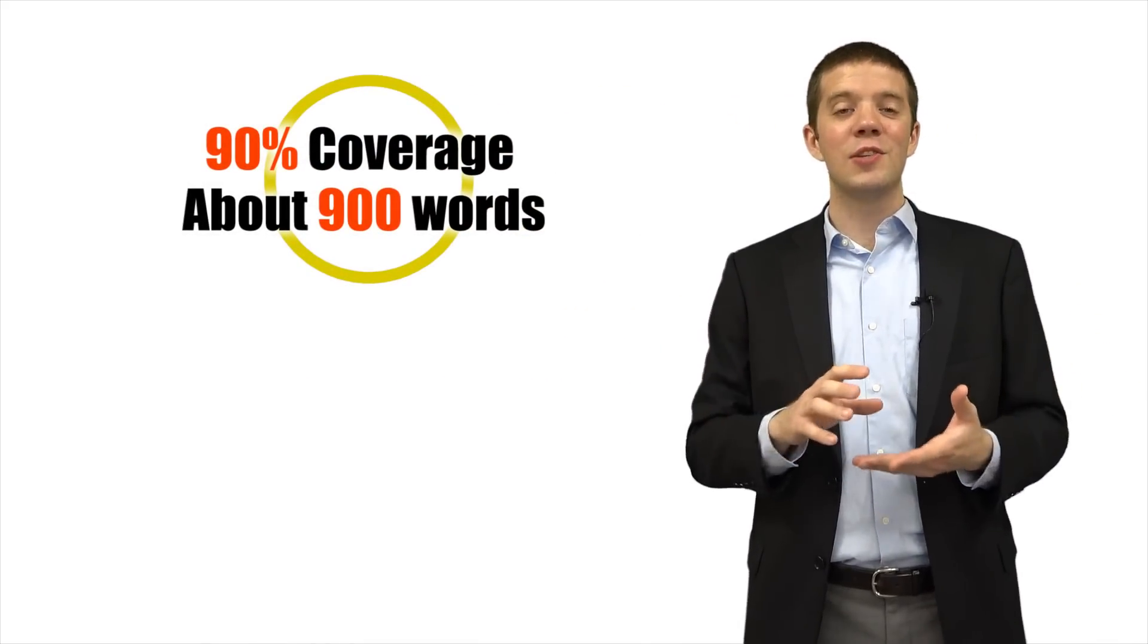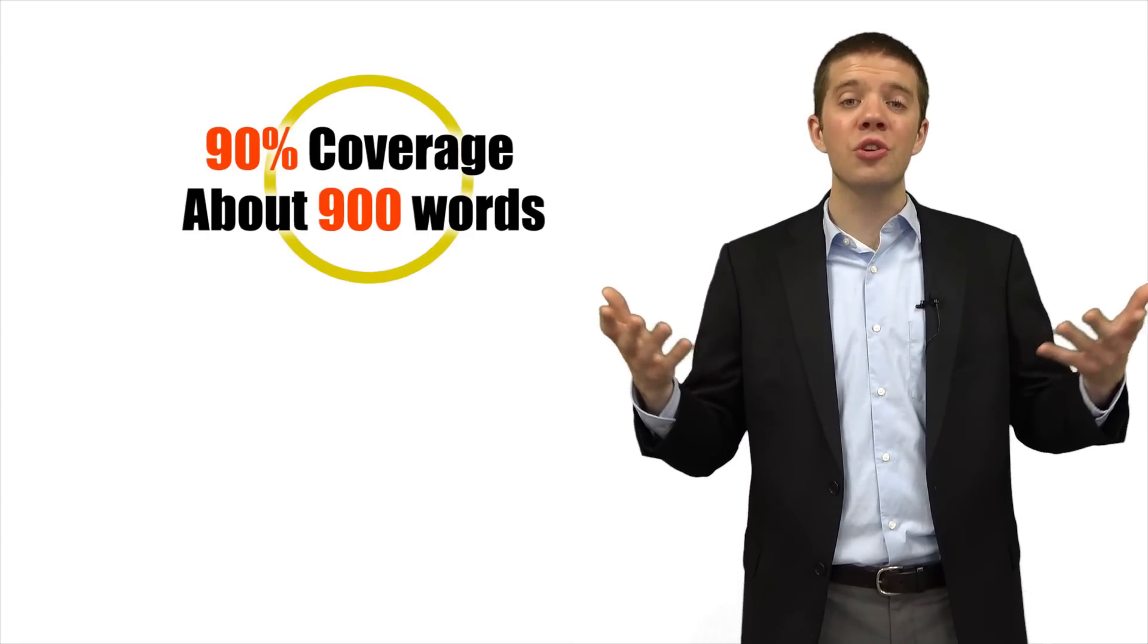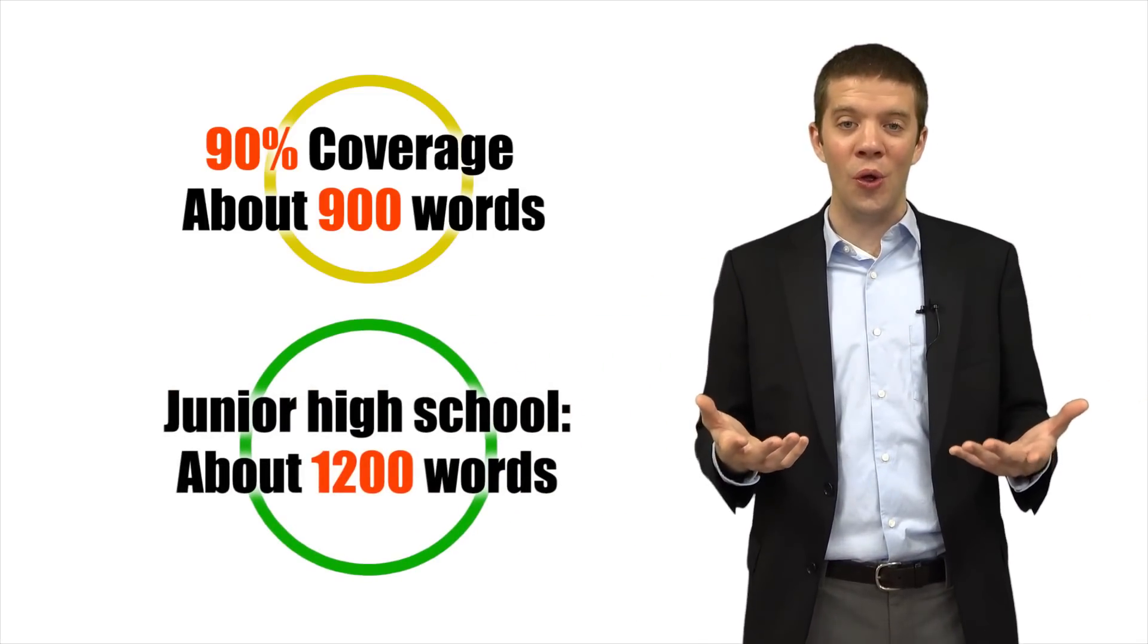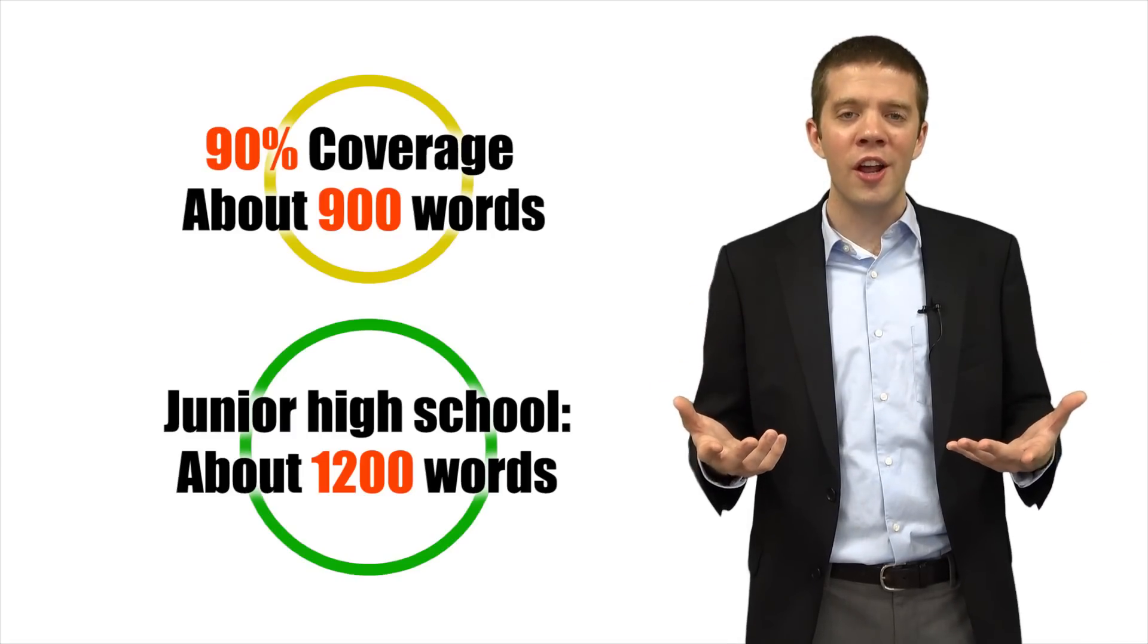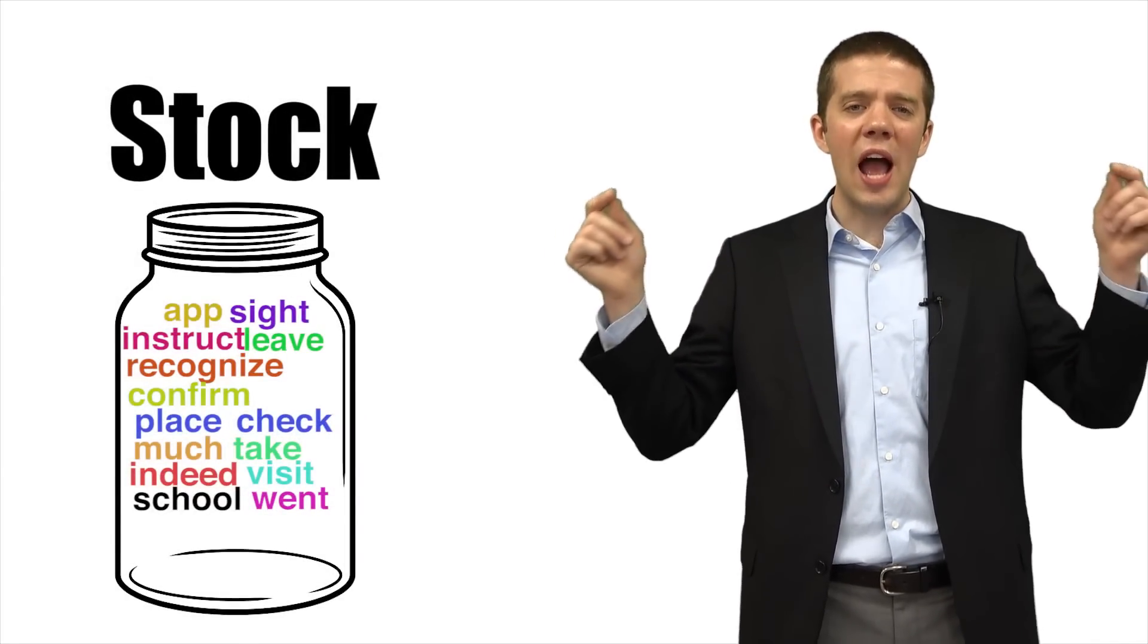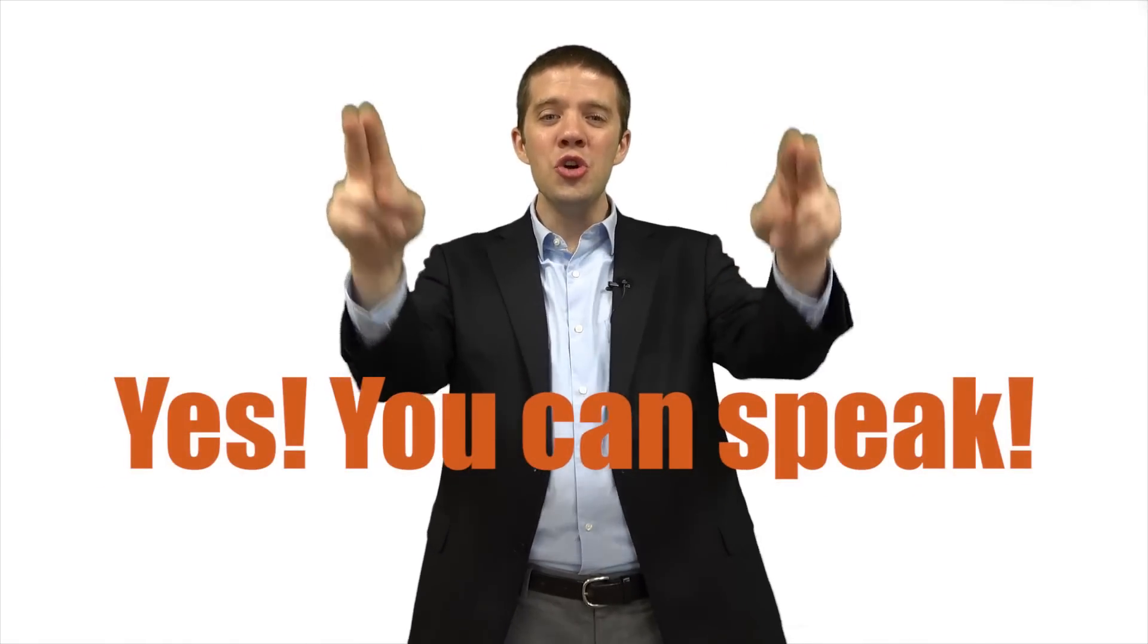We focus on the development of action skills. This alone is enough for most Japanese high school graduates. 90% of spoken English is made up of only 900 words. And if you graduated from a Japanese junior high school, you probably already learned about 1,200 words. So if you start training to activate your stock, you can start speaking in English conversations now. Yes, you can speak.